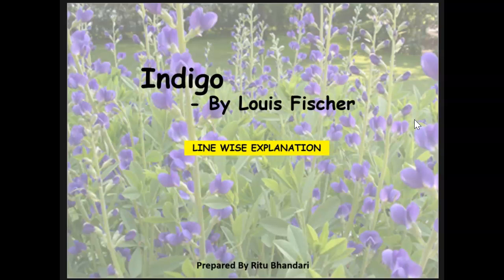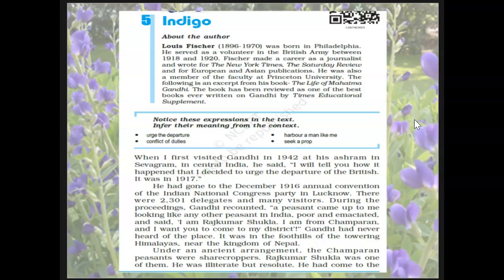Indigo sharecropping exemplifies the injustice of the British and the Indians' submission to British authority. The Champaran movement, which centred on indigo sharecropping, led to social and cultural upliftment of the peasants. Thus the title Indigo is very highly suggestive and appropriate. In the first paragraph we find how Rajkumar Shukla was able to convince Gandhi to come and deal with the exploitation at Champaran. The 'I' in this line refers to Louis Fischer — it is a first-person narrative account of his experience with Gandhi in relation to the sharecropping incident.